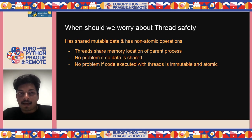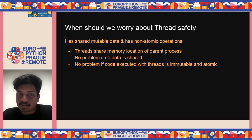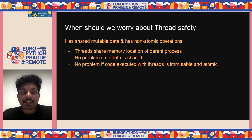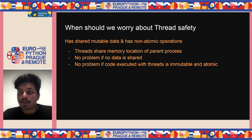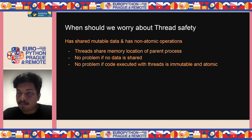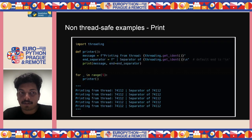When should you worry about thread safety? If your program has mutable data and performs non-atomic operations on that data, you should be concerned. Since threads share memory locations of the parent process, every thread has access to the same memory. If data is not shared, or code executes atomically, there's probably no problem. But if operations are non-atomic with shared mutable data, you need to fix that.